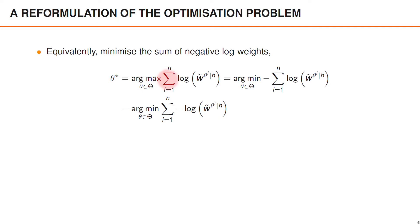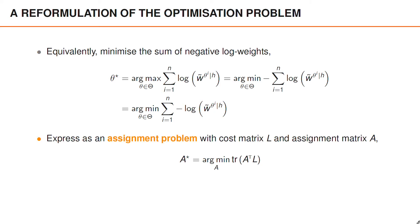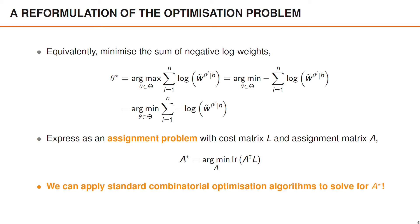Equivalent to maximizing the sum of the log weights is to minimize the sum of the negative log weights. We will show that this minimization problem can be expressed as an assignment problem with a cost matrix L and an assignment matrix A, where the cost of the assignment is the trace of A transposed L. This will allow us to apply standard combinatorial optimization algorithms to solve for A star, and from A star we can obtain theta star.